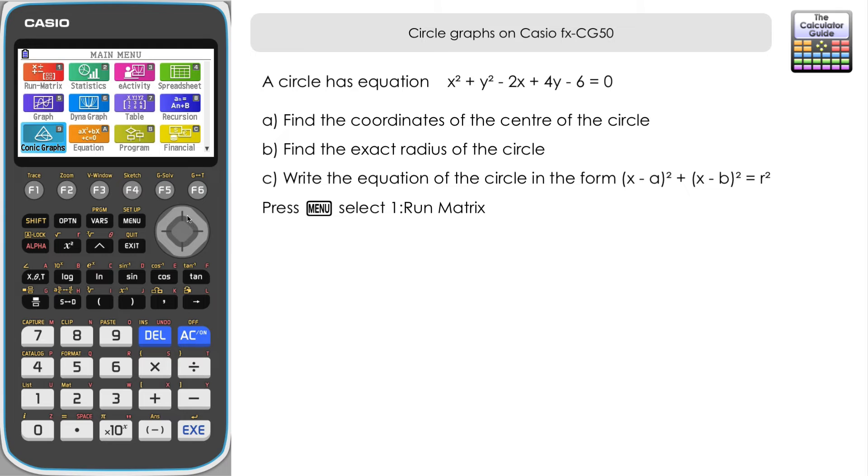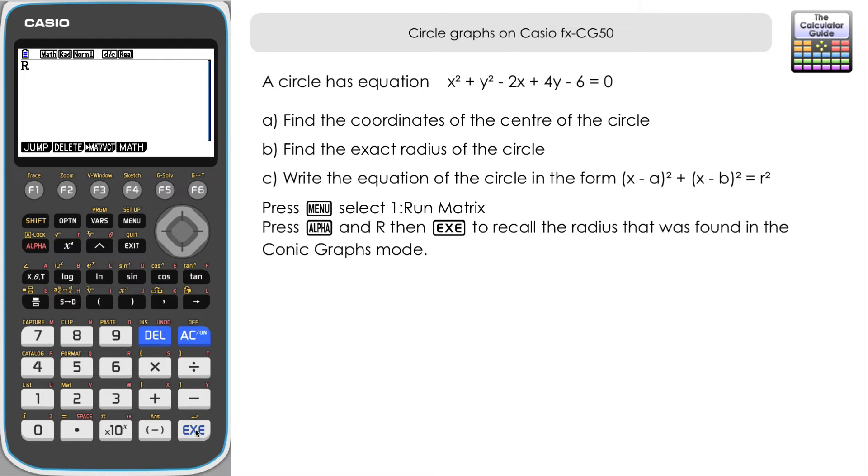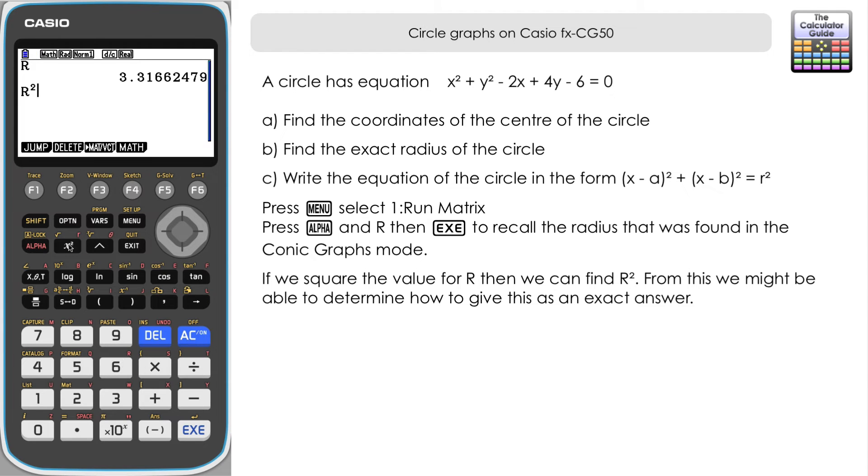So if we go to menu and then up to run matrix. And if you press alpha and R, it will actually recall that radius. So it's been stored in R4 as there we are 3.3166 again. Now we should know from the way that the equation of a circle is set up that this might be the square root of something because the equation for the circle is often set up R squared. So what I'm going to do is just square this and see if that gives us another answer. Well that's given us 11. That's given us the whole number 11 there. So we could actually give this as an exact result by saying it's the square root of 11. So let's just try that square root of 11. Press equals and then press SD. You can see that that's matched the decimal equivalent of what we had for the radius before. We could give the exact radius as being square root 11 rather than 3.3166 which isn't exact.